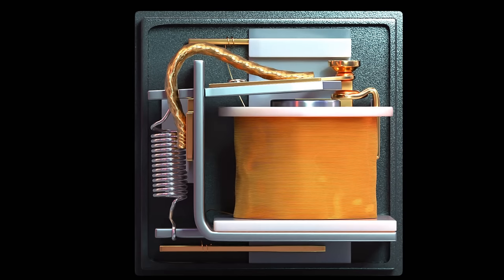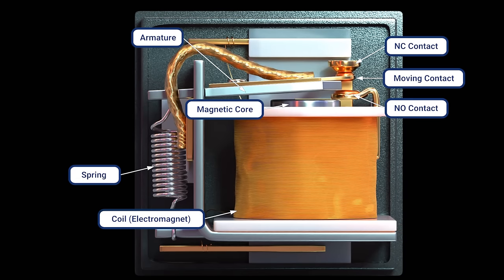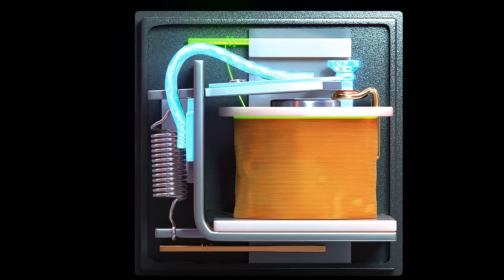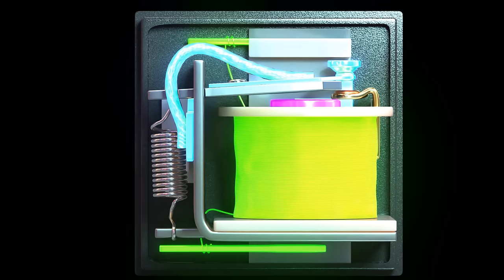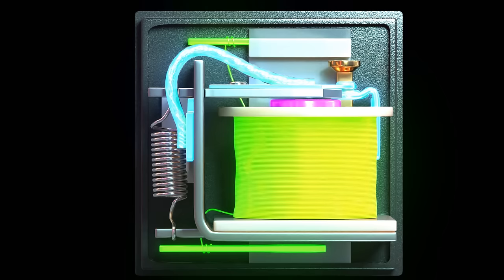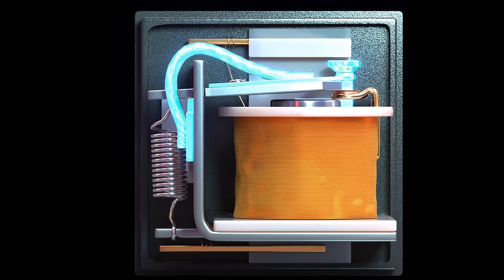At its core, a relay consists of a coil, also known as an electromagnet, and a series of electrical contacts. When electrical current passes through the coil, it generates a magnetic field. This magnetic field causes a metal armature to move, opening or closing the contacts attached to it.